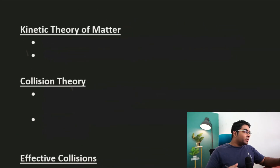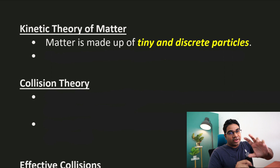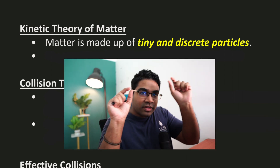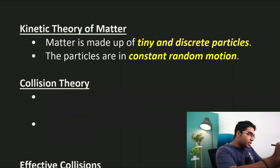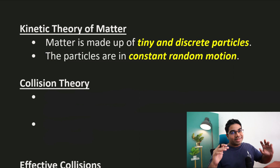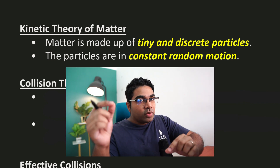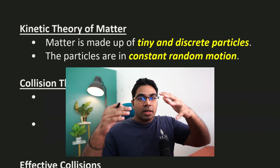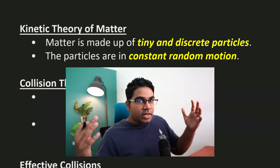The kinetic theory of matter states that matter is made up of tiny and discrete particles — very small particles that are separate from one another. It also states that the particles are in constant random motion. Solid particles will vibrate about their fixed position, while liquid and gas particles are free to move around randomly.